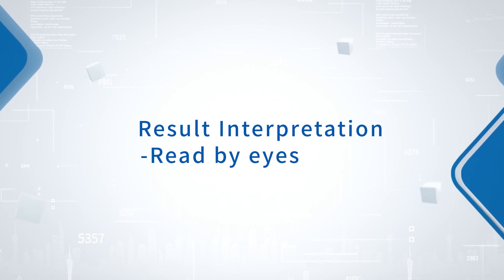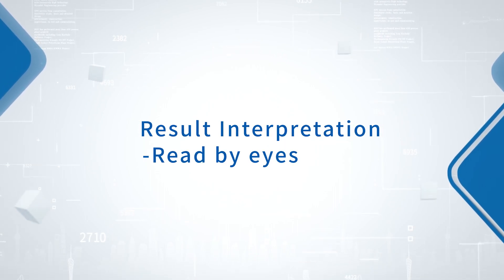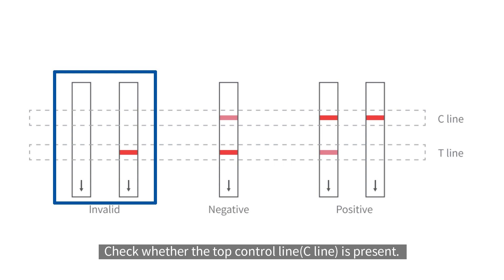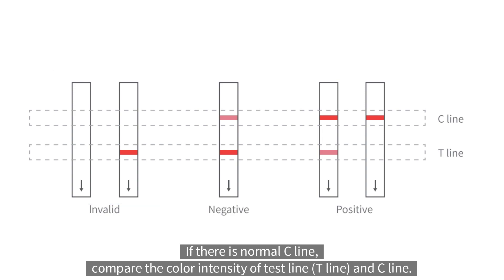Result Interpretation. Read by eyes. Check whether the top control line is present. If there is no visible C line, the test is judged as invalid. If there is normal C line, compare the color intensity of test line and C line.